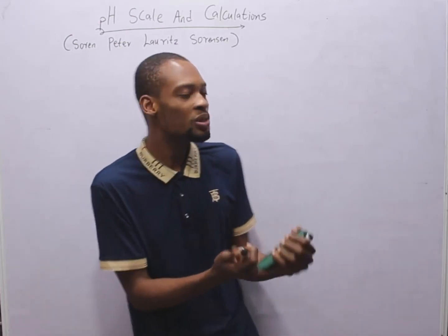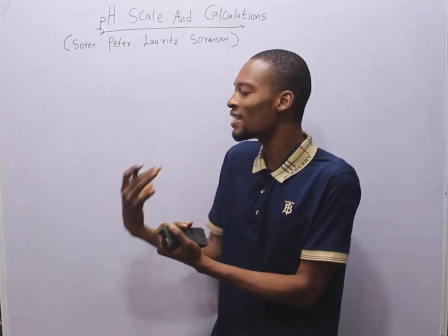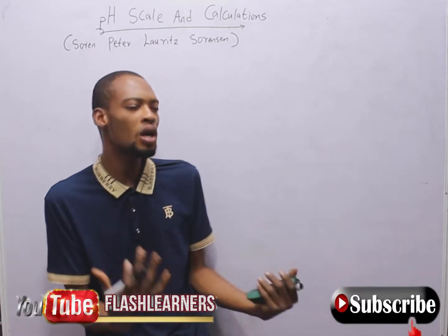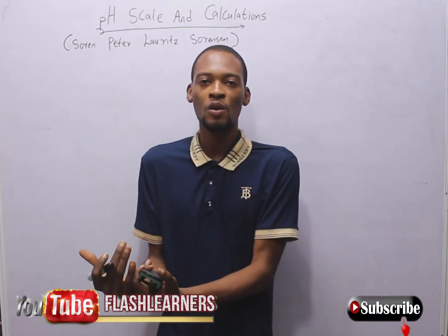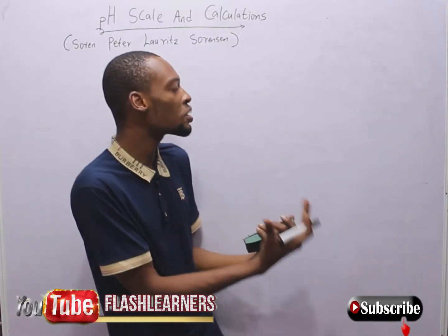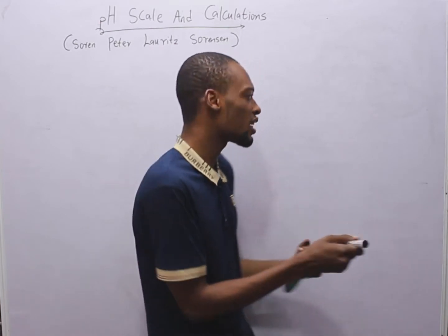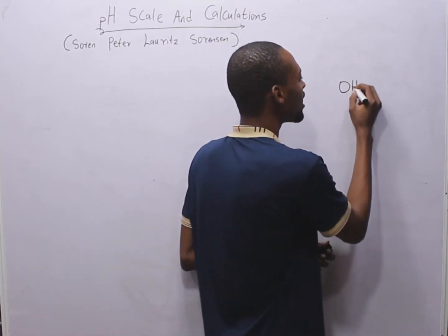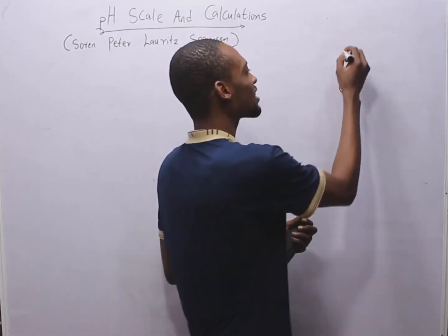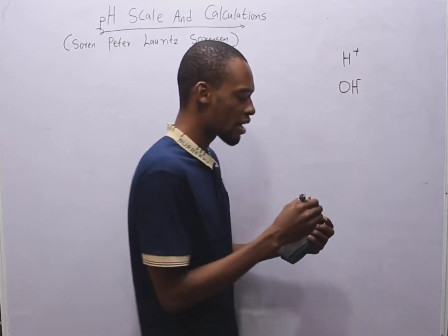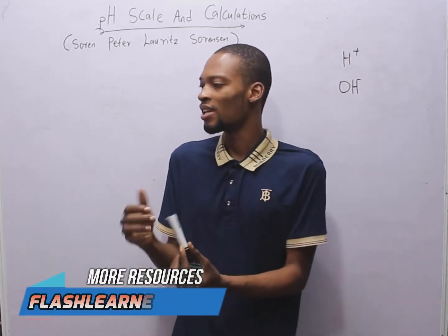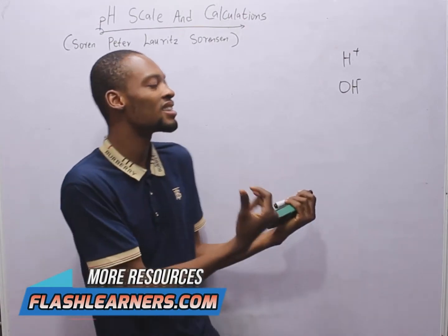Remember that according to Arrhenius, an acid is any substance which when dissolved in water produces hydrogen ion. Meanwhile, base is a substance which when dissolved in water produces hydrogen ion. According to Bronsted and Lowry, acids are proton donors, meanwhile bases are proton acceptors.